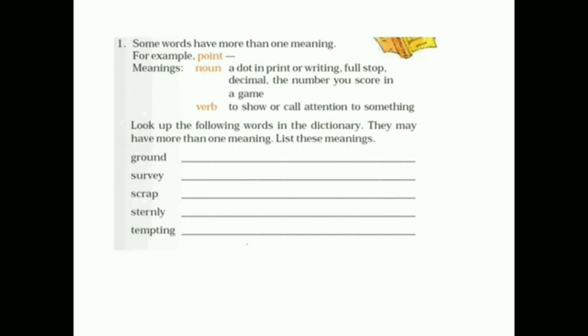For example, point. So point here is a word having more than one meaning. So here is for example point. Point means a dot in print or writing. When we are writing, we are using a point, sometimes we will call it a point. Next one, full stop. After a sentence, we showing that sentence is over. That is full stop. So that time also we will say point. And the decimal, 90.6, 95.6, that time we will use one point that is decimal. Then the number you score in a game. I got five point, I got six point, that kind of point. That is meaning of point as a noun.